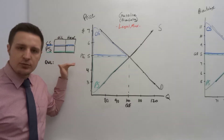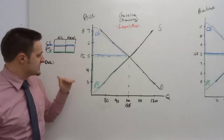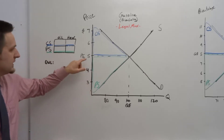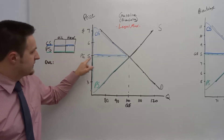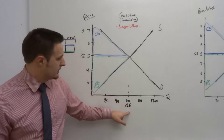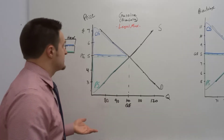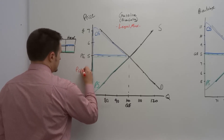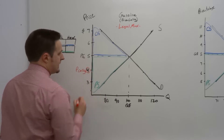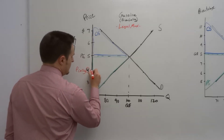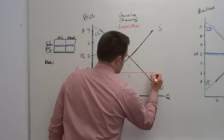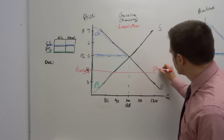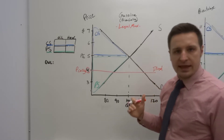A price ceiling means that the government imposes a legal maximum price that sellers can charge to buyers. You might think of it as an interference in the ordinary supply and demand equilibrium price, which was $5 at a quantity of 100. What is the distorting effect if we impose a price ceiling of say $4 per gallon? First, let's line this price up to our supply and demand curve. For the sake of simplicity, it is now illegal to charge a price above that $4 threshold.